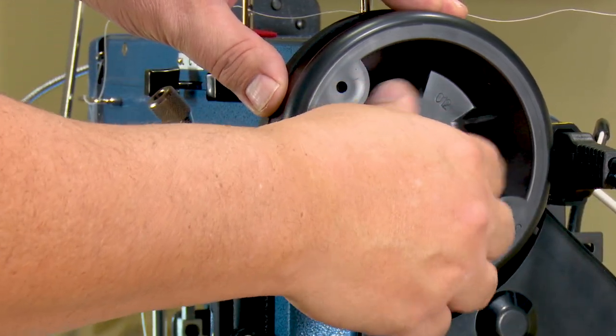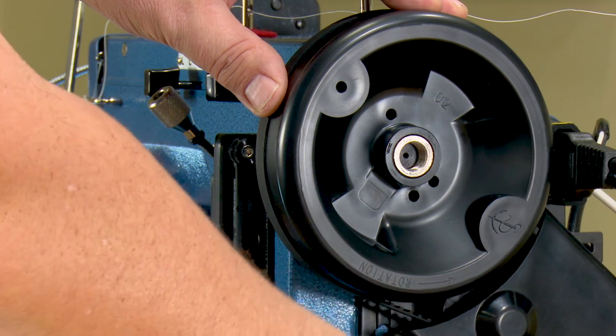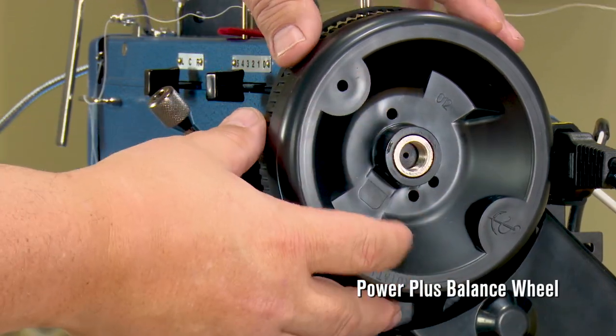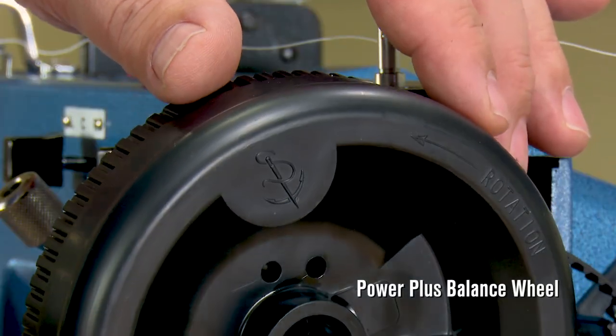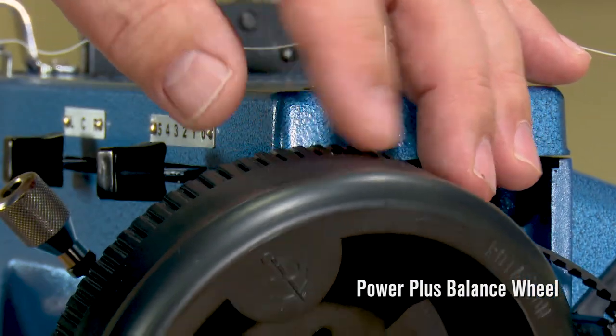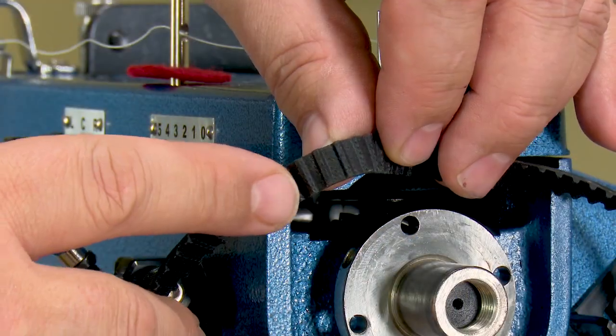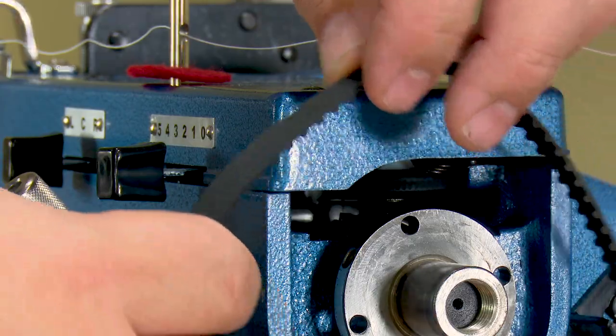Included with the Plus Package is the Power Plus Balance Wheel which is twice the size and power of a traditional flywheel for more slow speed control and power. It's also driven by a caulked belt and pulley drive system for a no slip operation.